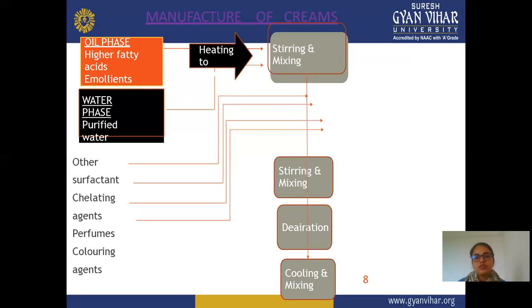Next is the manufacturing procedure for cream, which is common for both cold cream and vanishing cream. Both creams require an oil phase and a water phase. Both phases are taken in different containers because mixing occurs at a particular temperature. Do not mix both oil and water in a single container — both are required in separate containers.